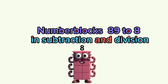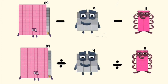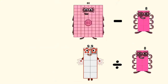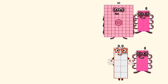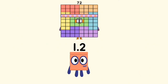Number Blocks 89 to 8 in subtraction and division. 89 minus and divided by 9 equals 80 and 9.9. 80 minus 8 and 9.9 divided by 8 equals 72 and 1.2.